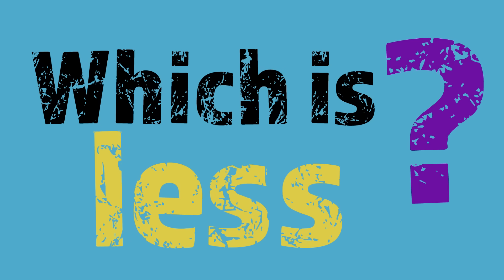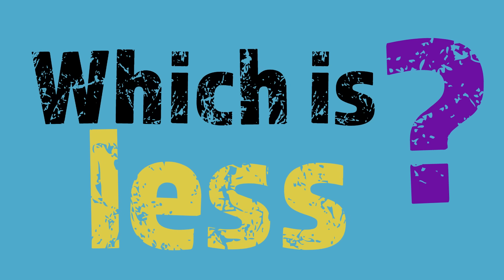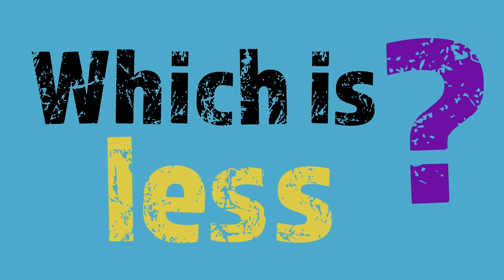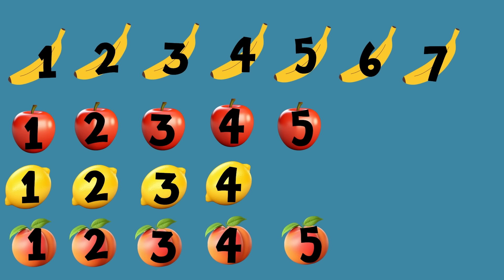Which is less? There are seven bananas, five apples, four lemons, and five peaches. Which fruit has the lesser amount? You guessed it — the lemons are a lesser amount.